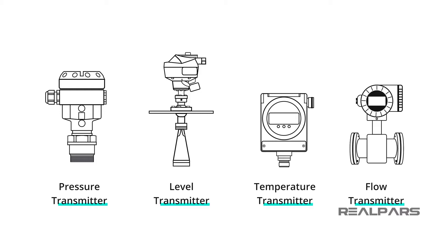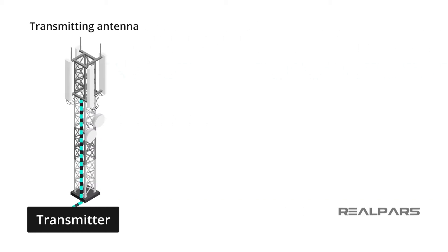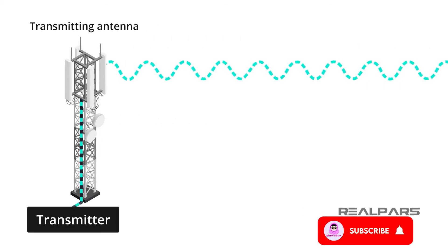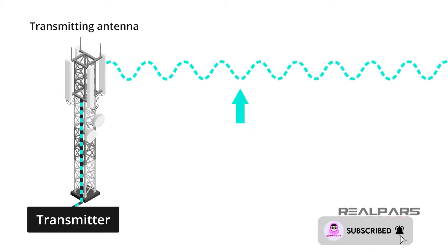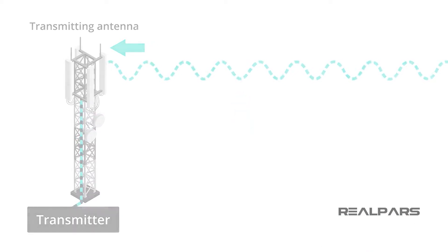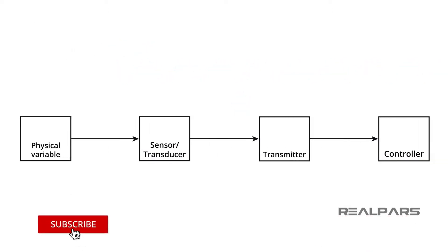First of all, let's talk about the term transmitter, because it has more than one definition. In the telecommunications world, a transmitter is a device that produces radio waves radiating from an antenna. In the world of process control, a transmitter is a device that converts the signal produced by a sensor into a standard instrumentation signal representing a process variable being measured and controlled.